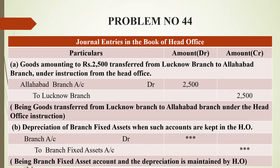The next entry is depreciation of branch fixed assets when such accounts are kept in the head office. The journal entry is: Branch Account debit to Branch Fixed Asset Account. The branch fixed asset value is going out, so we credit the branch fixed asset account. Since the asset is still inside the business of that particular branch, we debit the branch account. The narration is: being branch fixed asset depreciation maintained by head office.